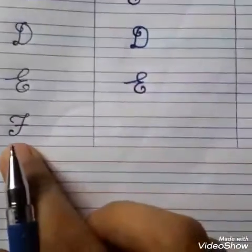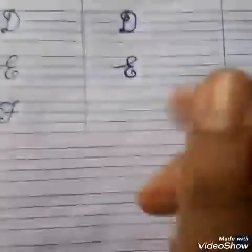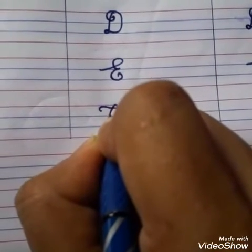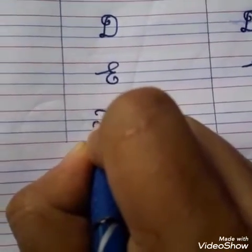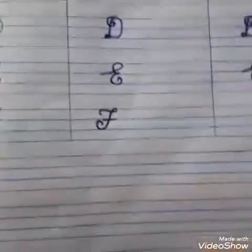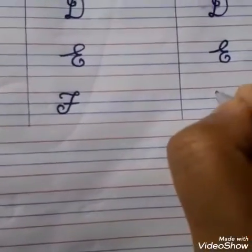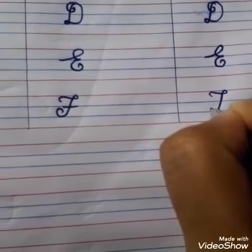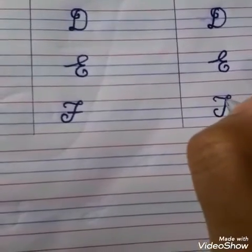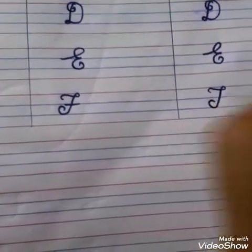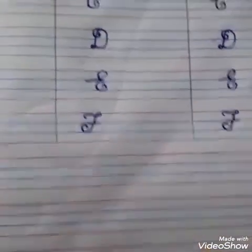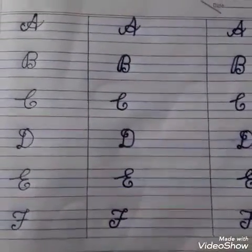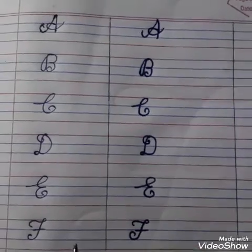And now we will write capital cursive F. First we will make a small circle, then a standing line with a curve, and in the center we will make a slipping line. Everyone understands all these alphabets. Now you all have to practice this regularly at home.